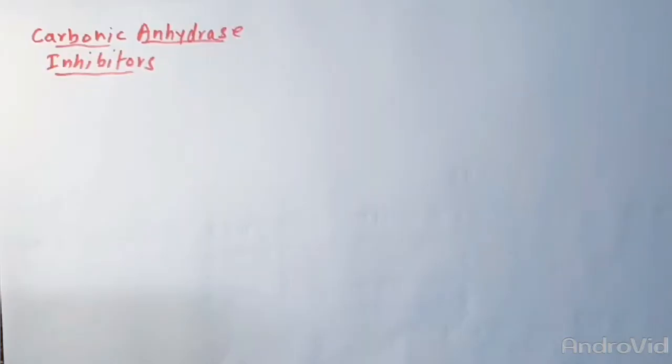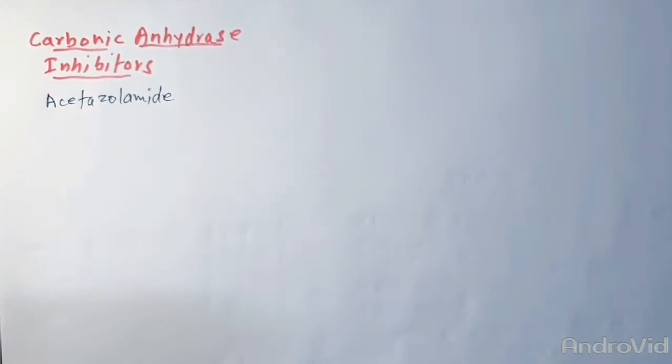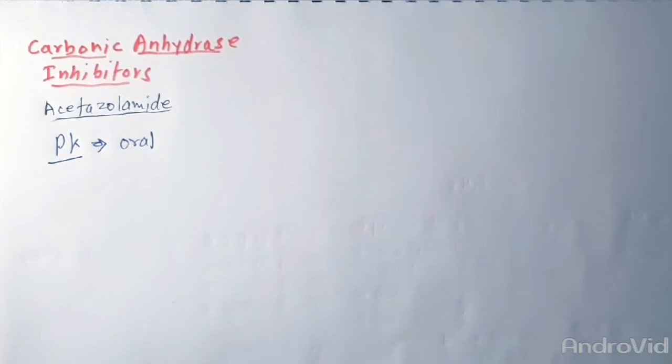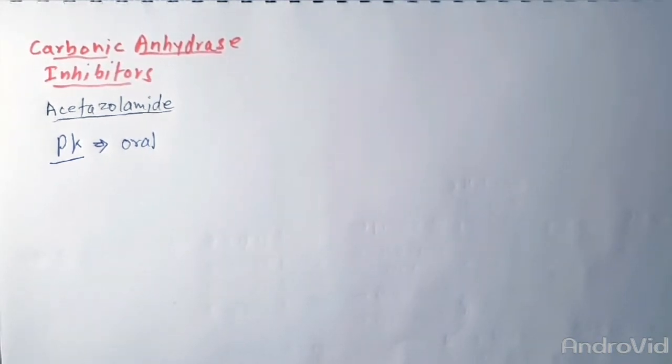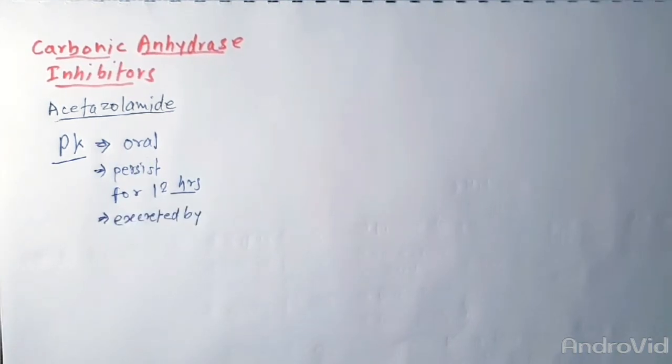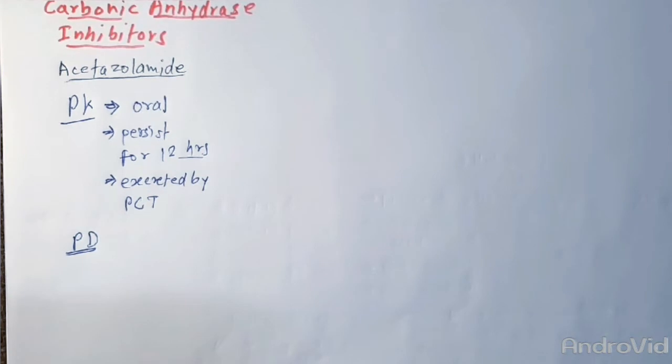CA inhibitors, that is acetazolamide, inhibit the carbonic anhydrase enzyme which blunts the sodium bicarbonate reabsorption. If we talk about pharmacokinetics, route of administration is oral, effects persist for 12 hours, and excretion is by PCT.